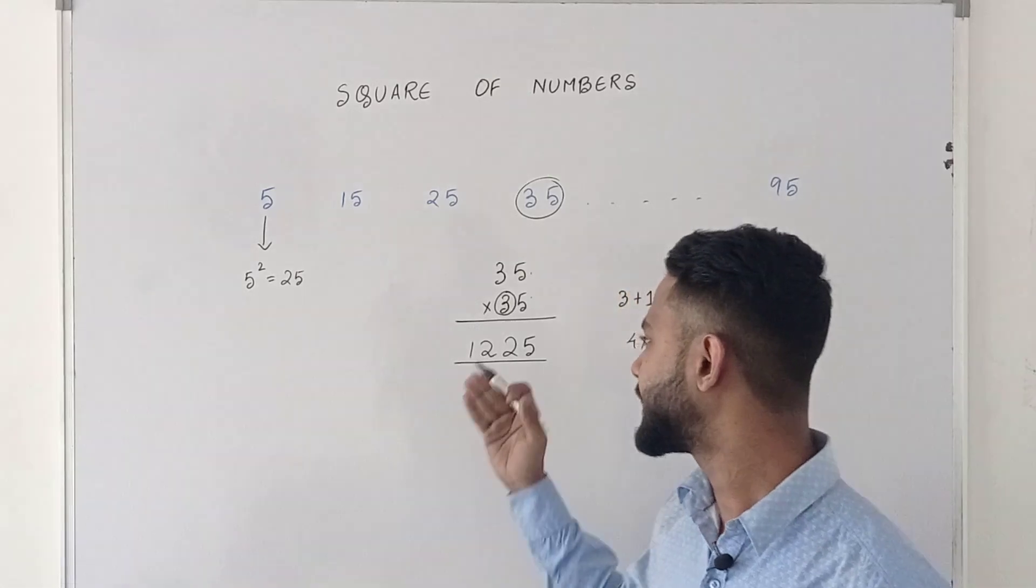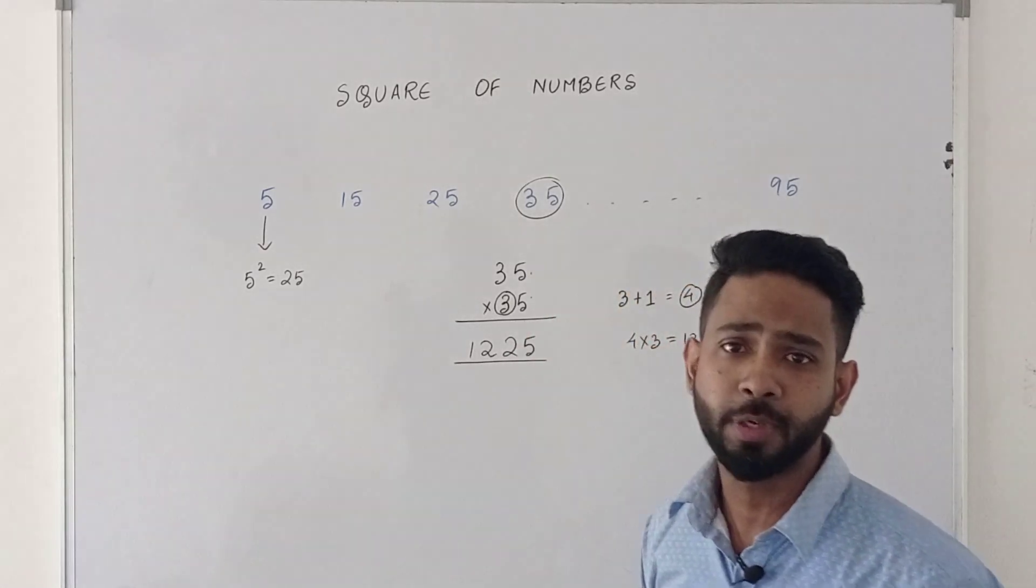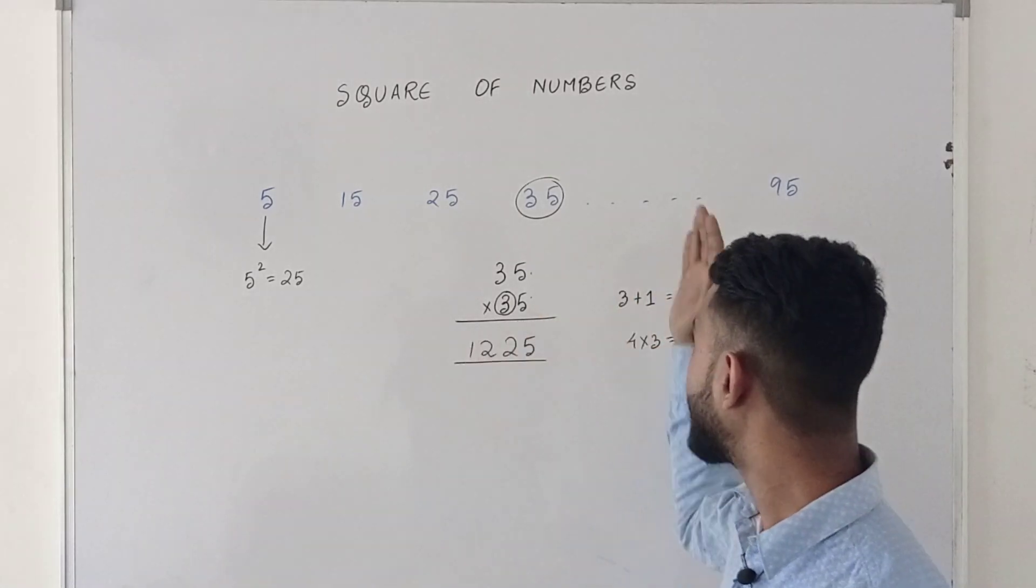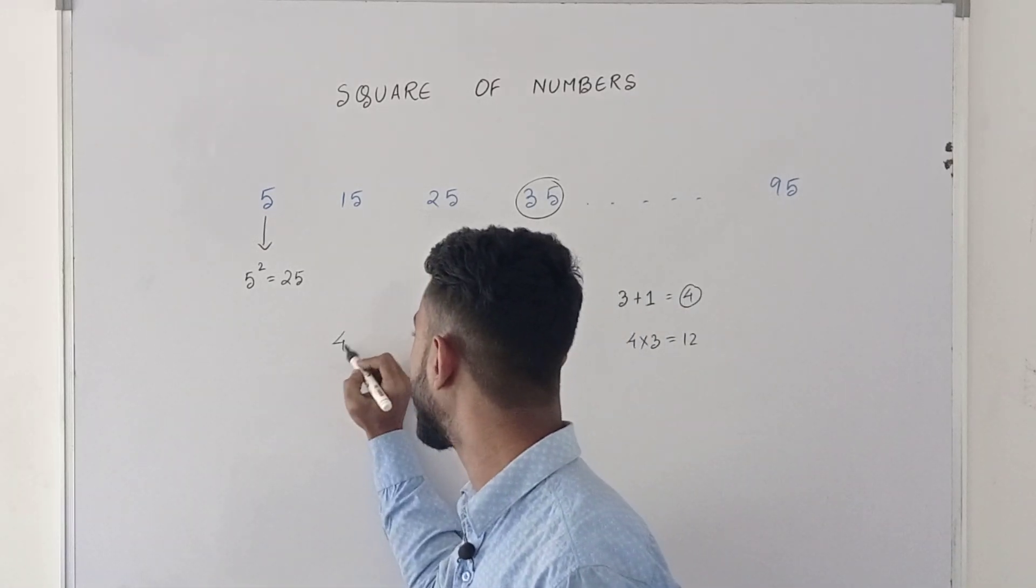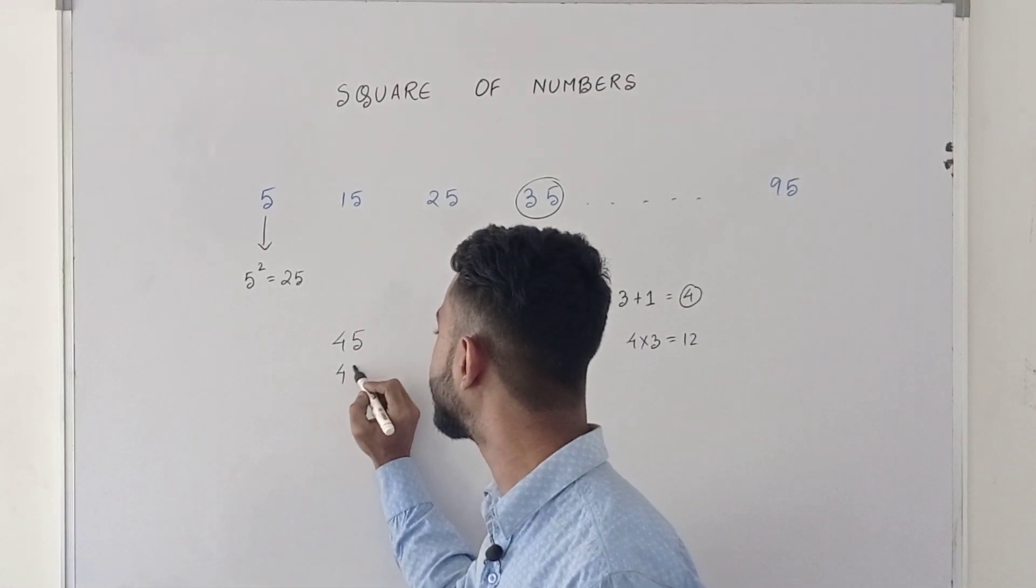And that is your square, that is the square of 35. So practice this trick. Let us see. Let us check 45 square.